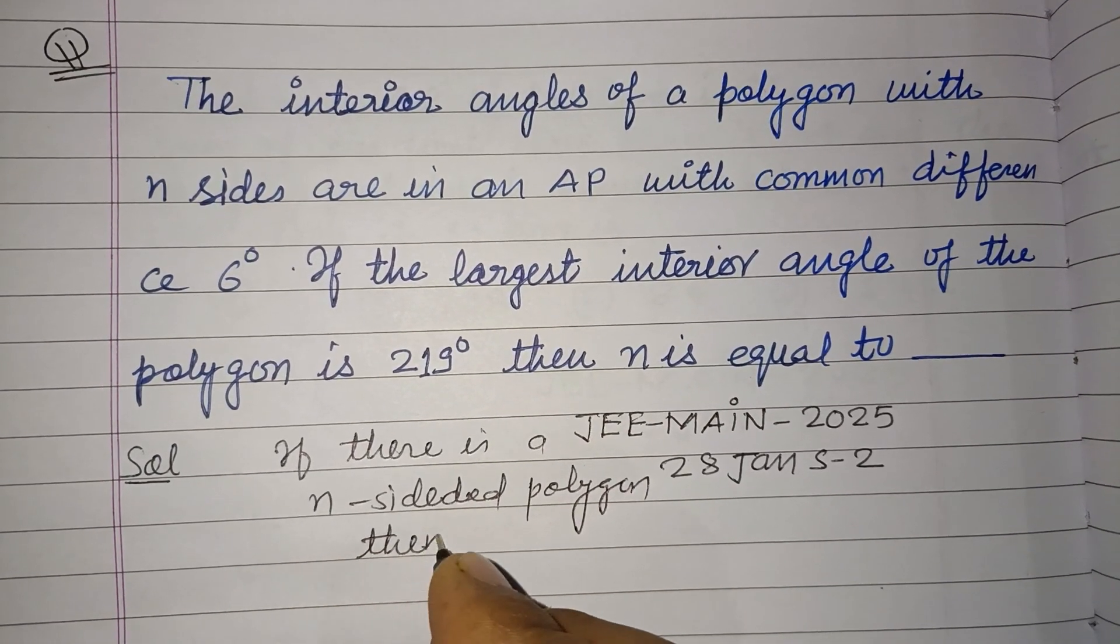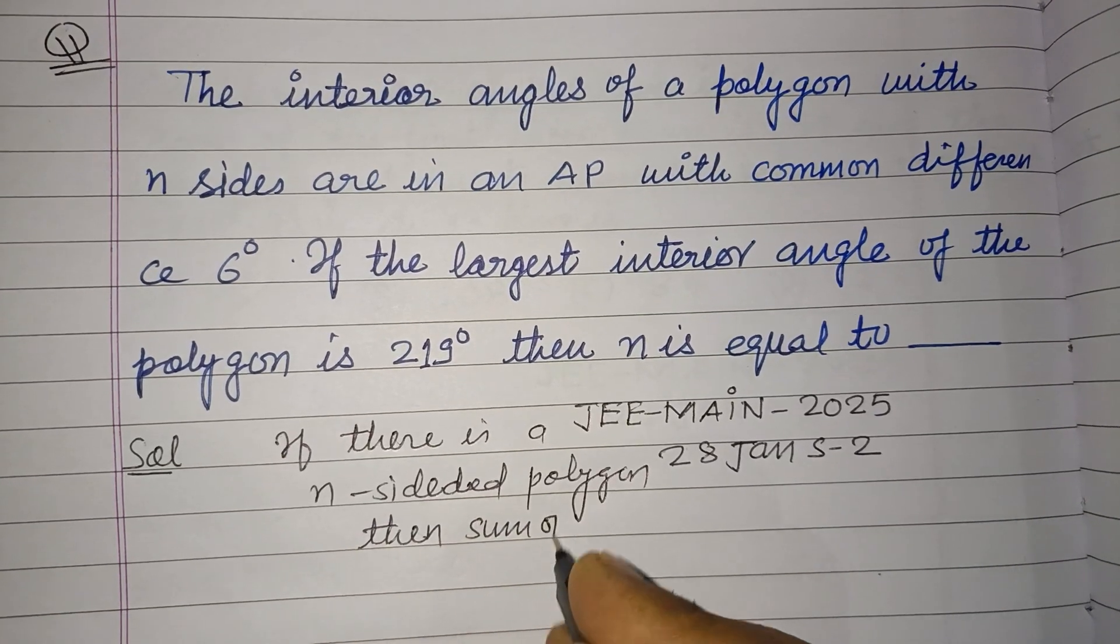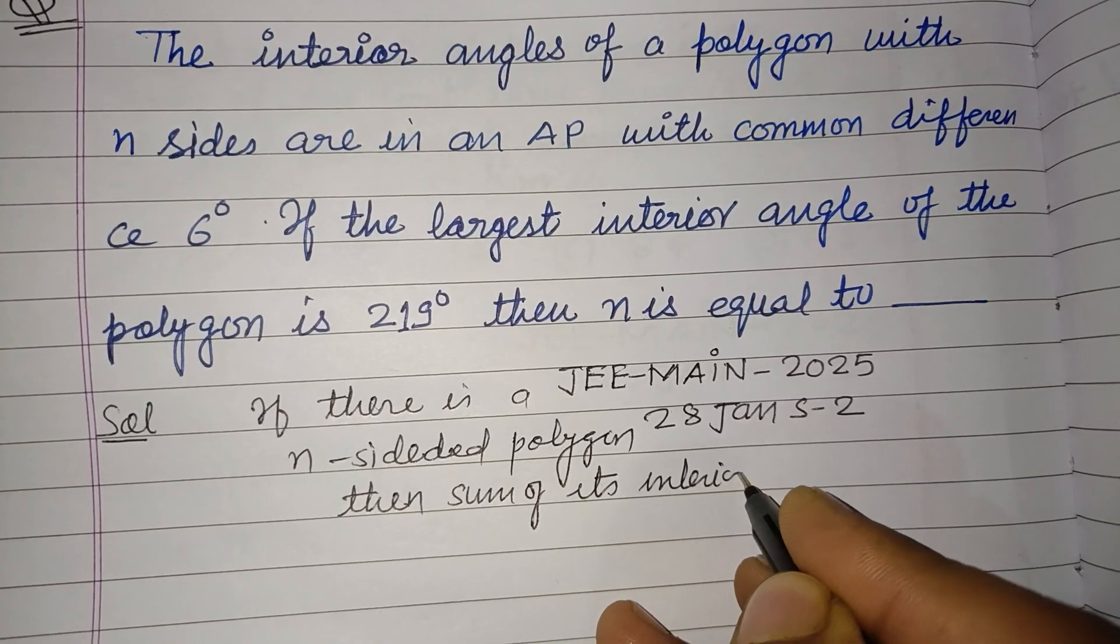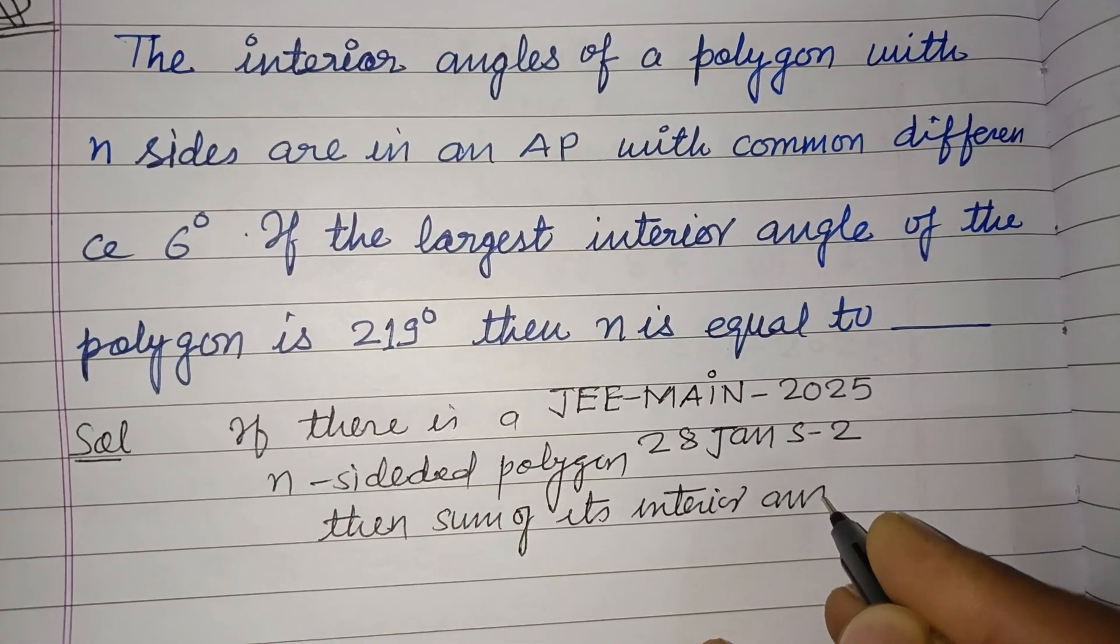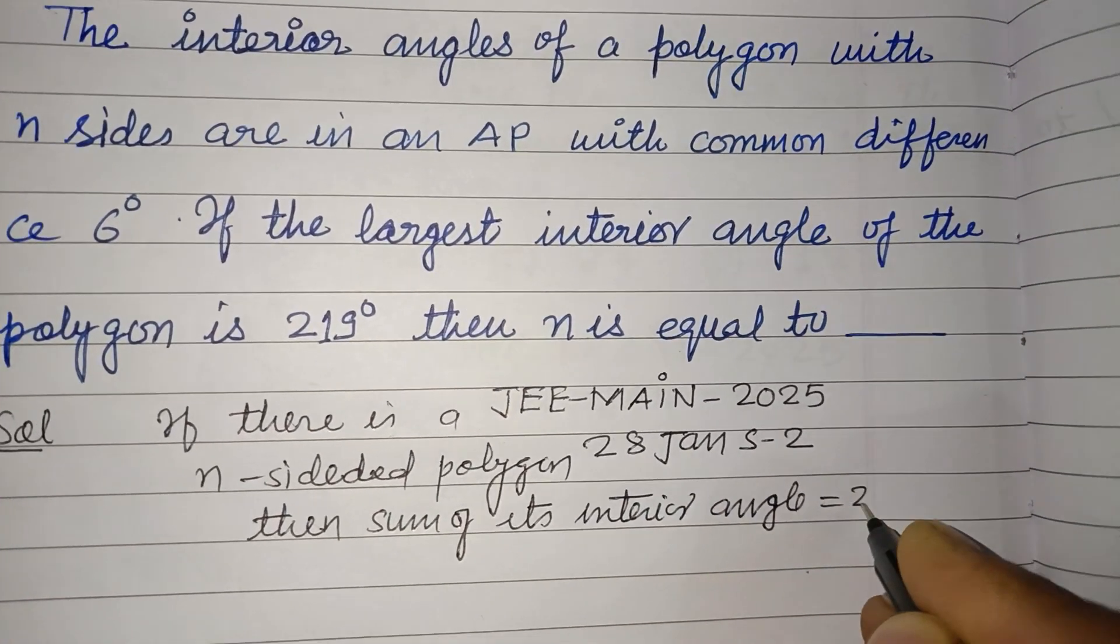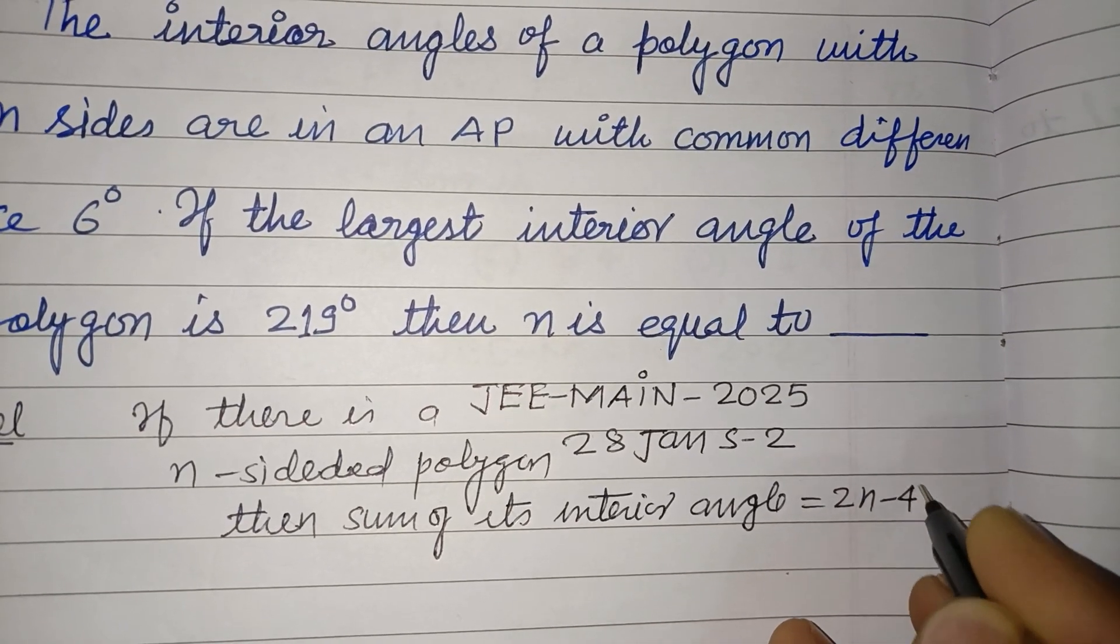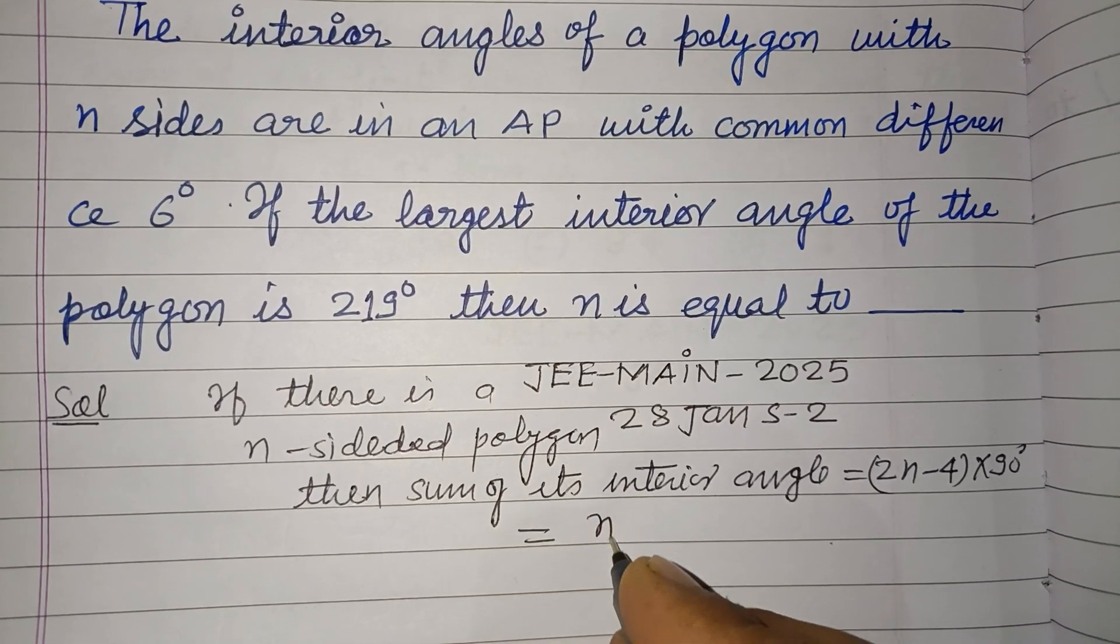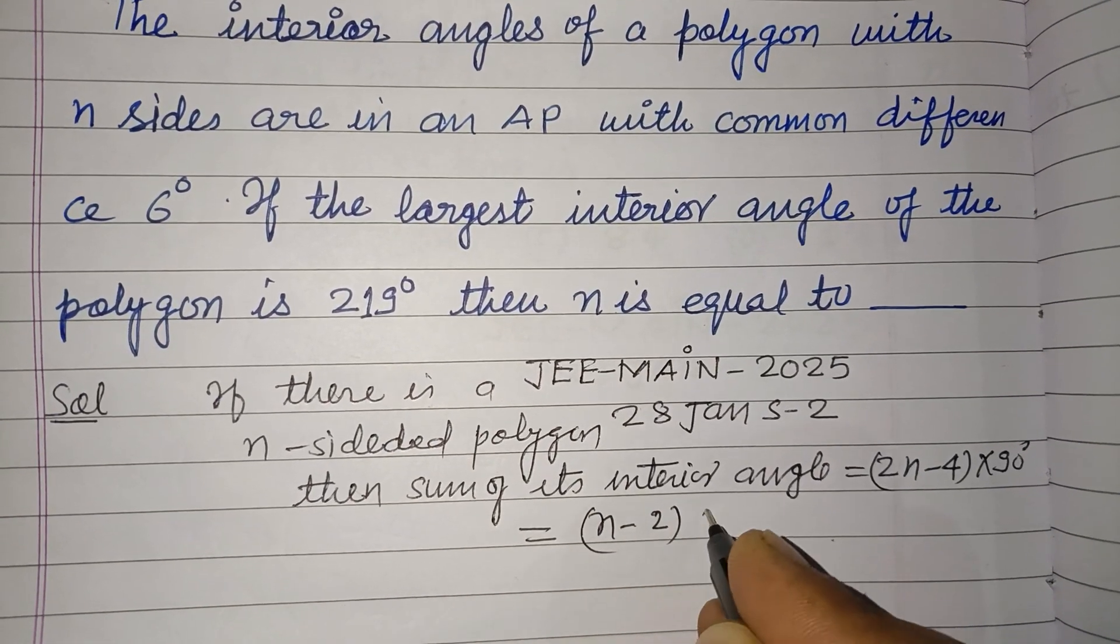The sum of its interior angles is 2n minus 4 into 90, or we can write it as n minus 2 into 180.